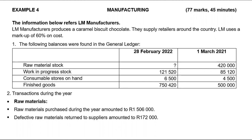Today I am going to do an example for manufacturing. The information below refers to LM manufacturers. LM manufacturers produces caramel biscuit chocolate and they supply retailers around the country. LM uses a markup of 60% — please highlight that. The following balances were found in the general ledger. Highlight the dates because they will tell you the beginning and end of the financial year.